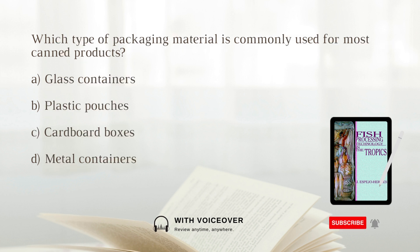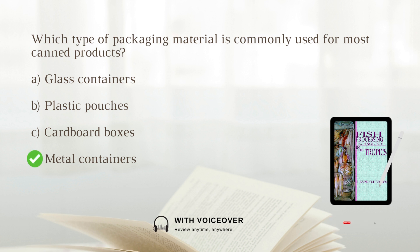Which type of packaging material is commonly used for most canned products? A. Glass containers. B. Plastic pouches. C. Cardboard boxes. D. Metal containers. Answer: D. Metal containers. Most canned products are packaged in metal containers.